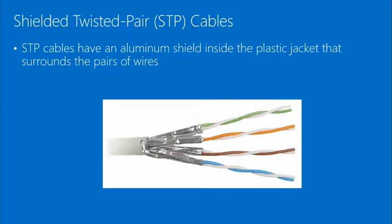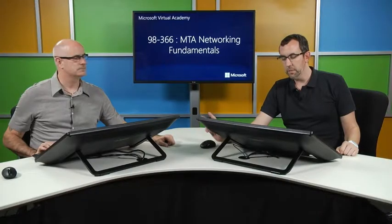Shielded twisted pair (STP) has each cable individually wrapped for extra protection. It requires more specialized tools to strip and remove because you have to strip both the overall cable and the shielded components. It is more expensive and a little more difficult to handle. Shielded twisted pair is not very common — it requires a bigger budget and is not something most people encounter in the field.